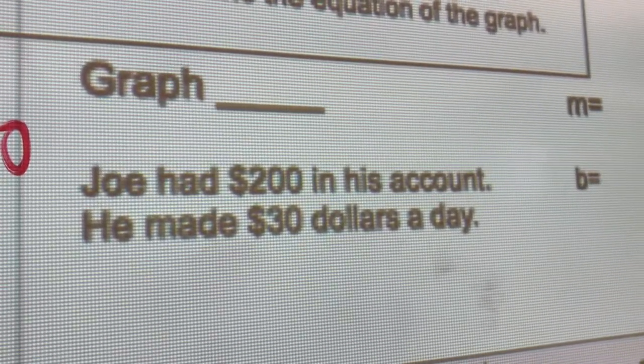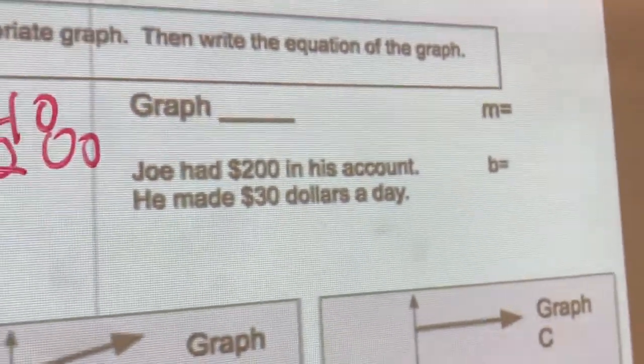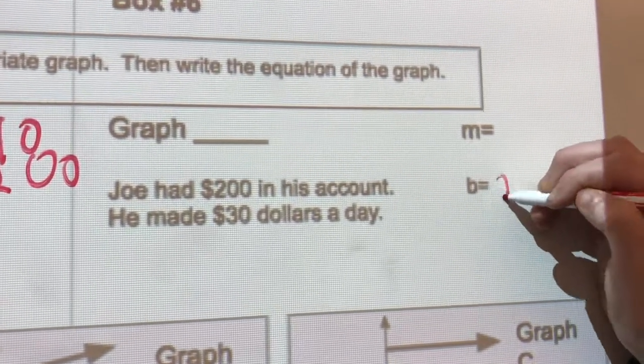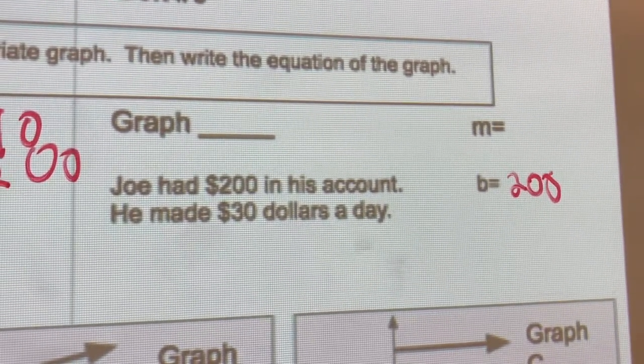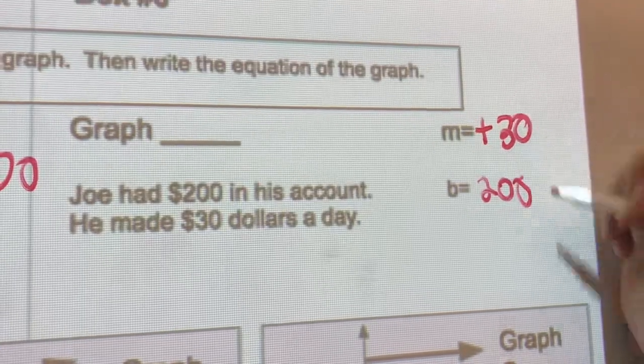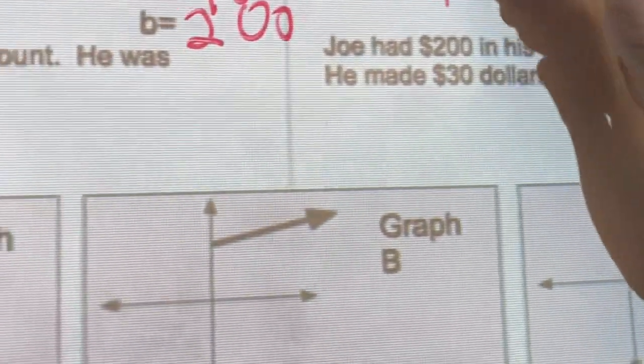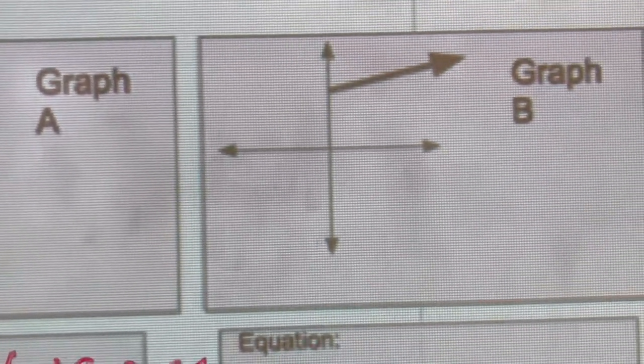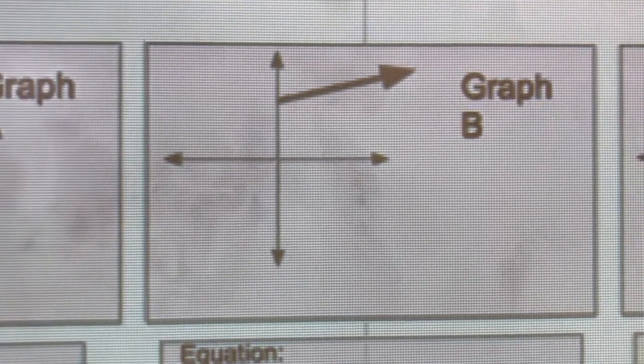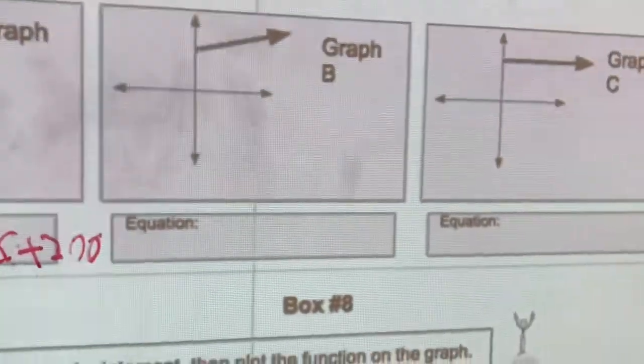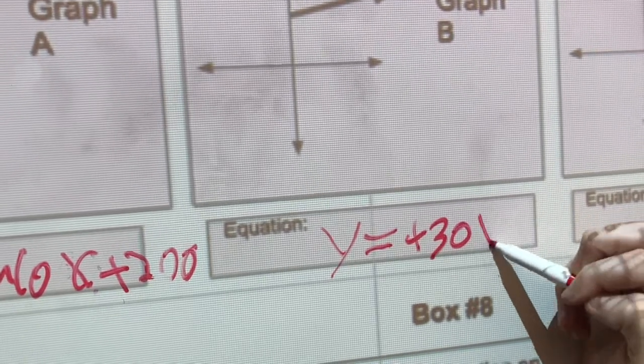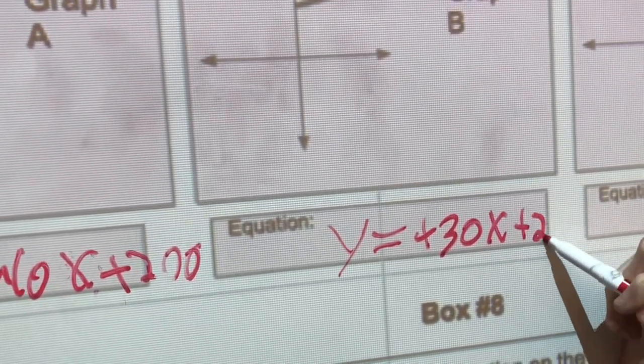So Joe had $200 in his account. He made $30 a day. Can you tell me the slope and the y-intercept there, the m and the b? $200 is b. And he made $30 a day, so it's positive 30. Okay. And that would be... I think you're right. Why do you say it's b? Because he's making $30 a day. So it's a positive slope or negative slope? Positive. Okay, and it starts up in the positive area of $200. All right, that makes sense. Can you make that equation? Yeah. Y equals positive 30x and then positive 200. Nice.